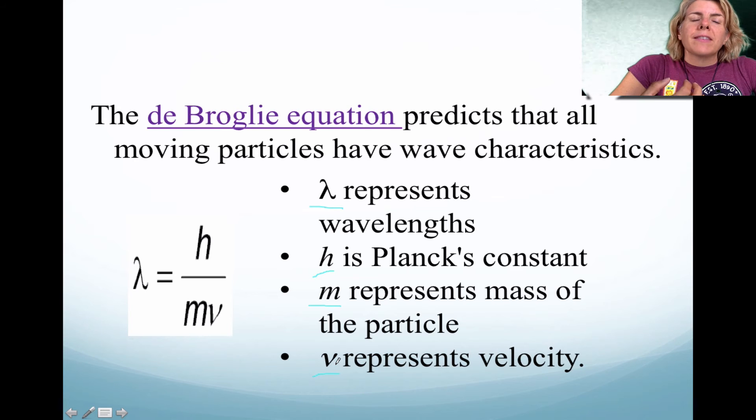You could even say a car has wavelength behavior. The only problem is the car is so massive, there's no way that we could see its tiny wavelength that it generates. However, an electron is tiny enough that we can see its large enough wavelength.